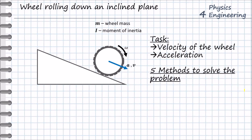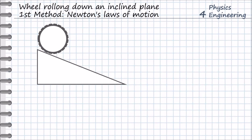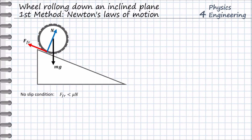We introduce today five different methods to solve this problem. We go now directly to method number one using Newton's laws of motion. First of all, we need to define the forces acting on the wheel: the gravity force, the reaction force, and the friction force. There is no slip between the wheel and the hill, so the friction force is less than the coefficient of friction times the reaction force. This is an important condition because it defines the kinematic relation between the velocity and angular velocity, and also defines the degrees of freedom of the system.